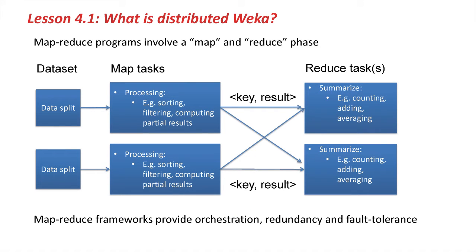Now let's return to MapReduce. MapReduce is the main processing model used by distributed frameworks such as Spark and Hadoop. MapReduce programs involve two phases: a map phase followed by a reduce phase. To start with, we have a dataset — probably a large dataset. This dataset is divided up into disjoint subsets. The framework takes care of doing this for us, then feeds a split of the data into a map task. Map tasks do their processing independently of all other map tasks — they're not aware of any of the other data splits or what the other tasks running in parallel are doing.